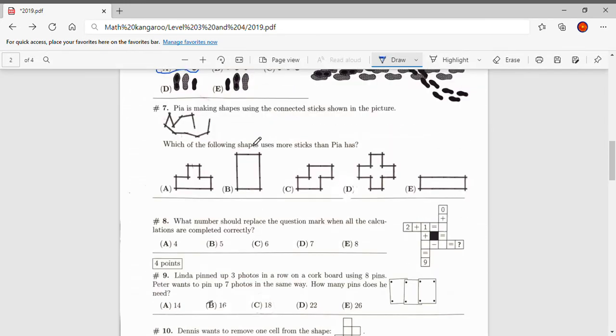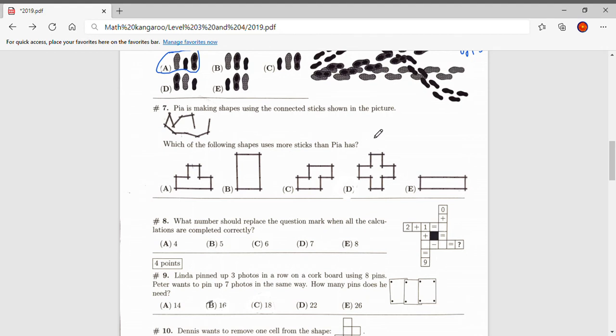Number seven. Pia is making shapes using the connected sticks shown in the picture. Which of the following shapes uses more sticks than Pia has? So let's count how many sticks are in the figure over here. So one, two, three, four, five, six, seven, eight, nine, ten. So there are ten. So all of them except one will have ten sticks. A has one, two, three, four, five, six, seven, eight, nine, ten. So A matches this.